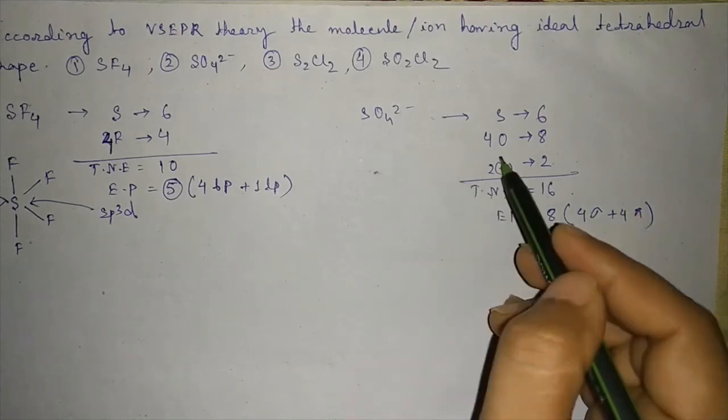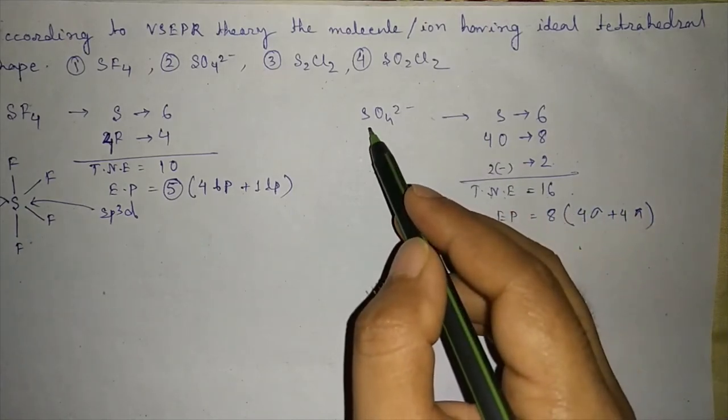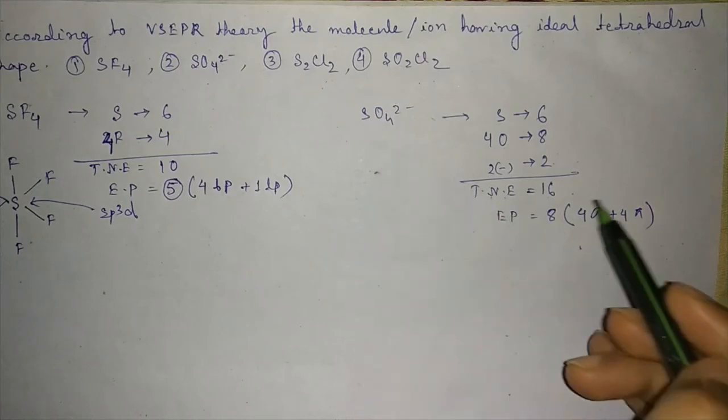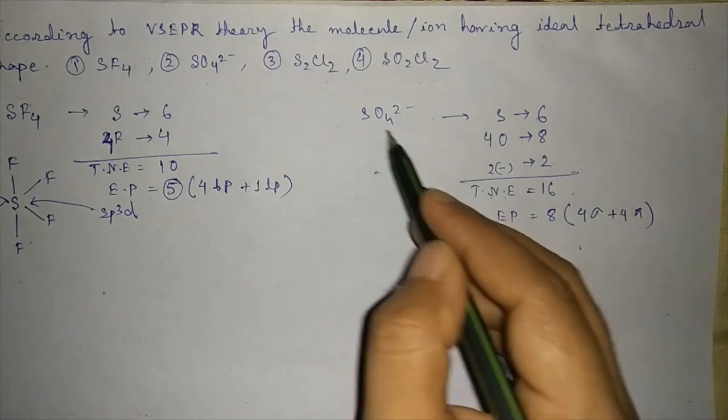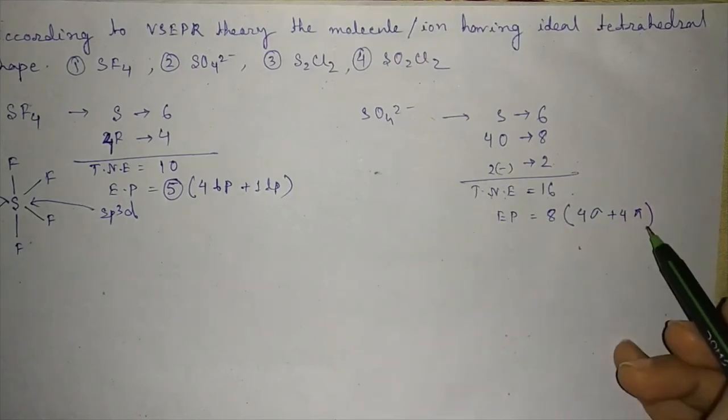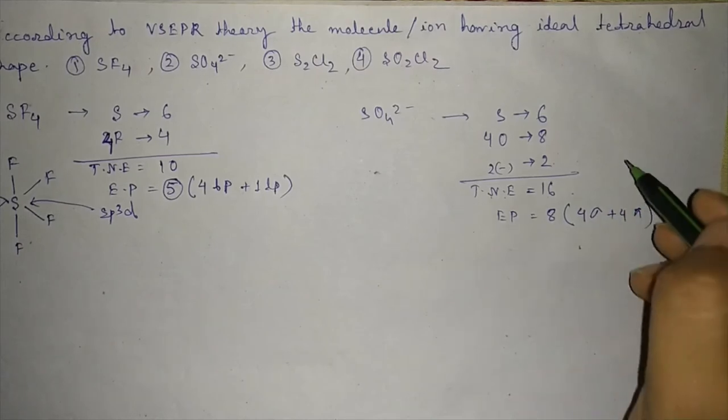So 4 sigma plus 4 pi bonds, because oxygen atom is connected to sulfur with 1 sigma and 1 pi bond. So for 4 oxygen atoms we get 4 sigma plus 4 pi.